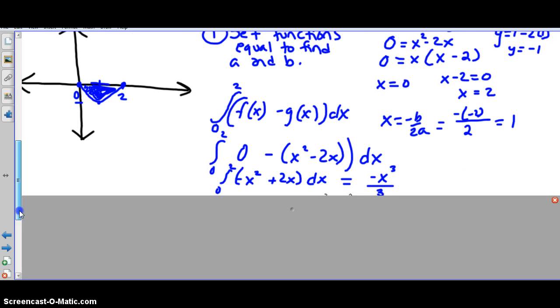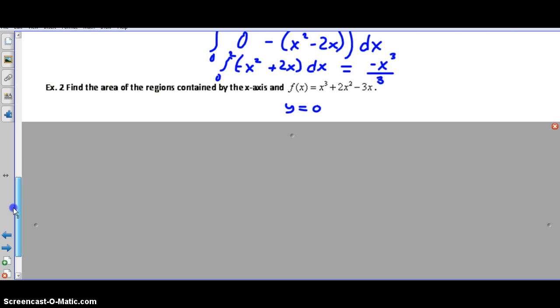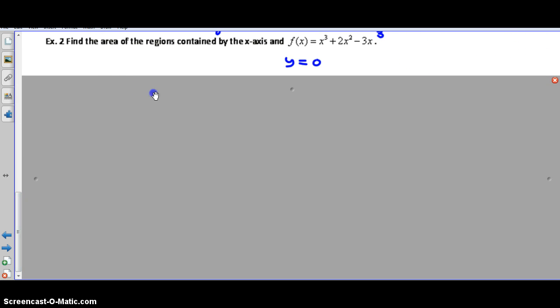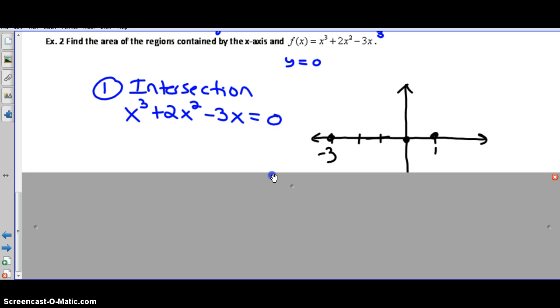Let's take a look at an example. I think I like example two better. If you're looking at example two, our question reads: find the area of the regions contained by the x-axis and our function equals x³ + 2x² - 3x. The first thing to realize is the two regions they're talking about: first the x-axis, and that equation would be y = 0, and the second would be this cubic x³ + 2x² - 3x.